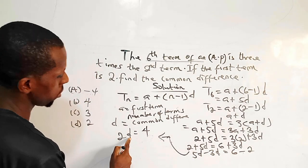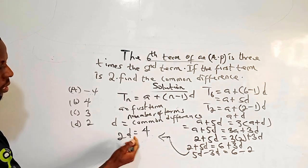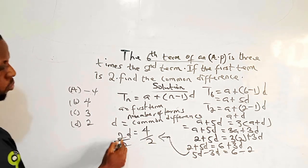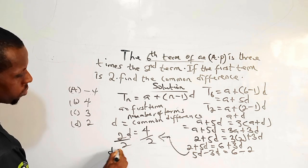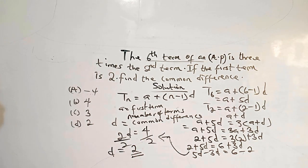So I can easily find d, which is the common difference. So to find d, I easily divide both sides by 2. So my common difference, d, represents 2. Thank you very much.